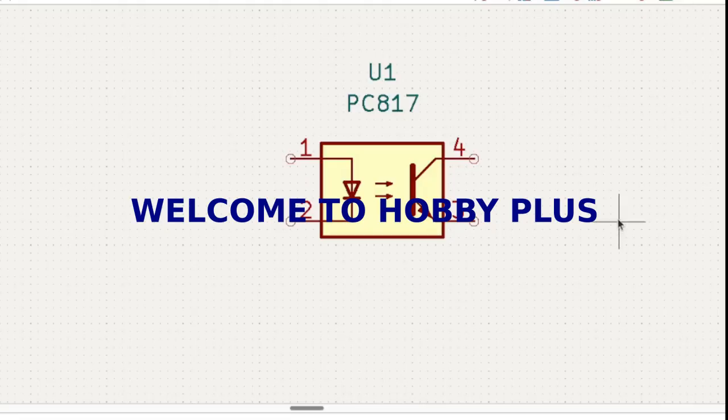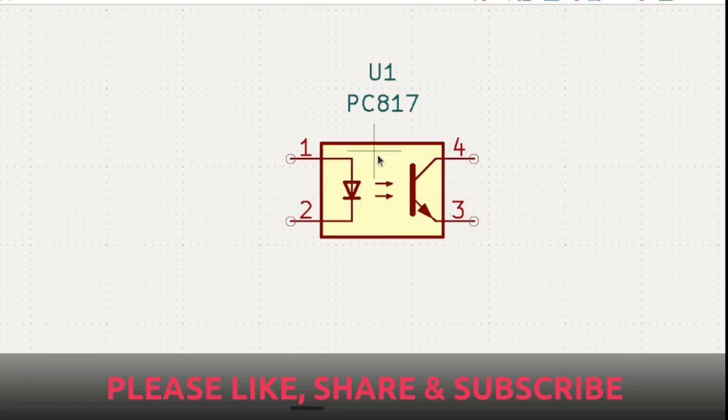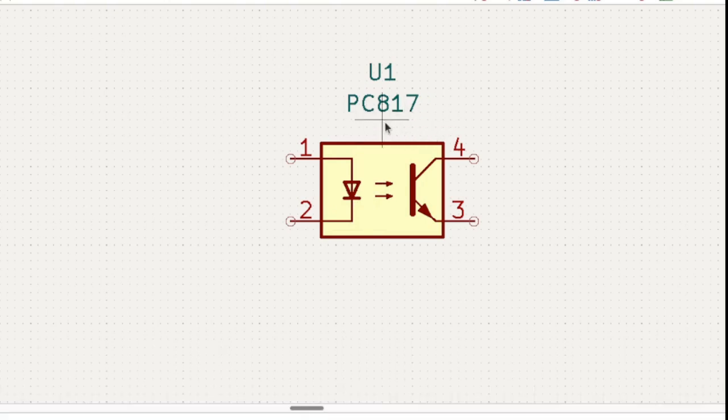Hi friends, welcome back to Hobby Plus. Today our discussion is about optocouplers. Optocoupler means this device is connected by light. This is your transistor collector, that is your transistor emitter, and that is your base which is connected with the LED. Primary and secondary are separated, but we can handle from primary to secondary with the light.